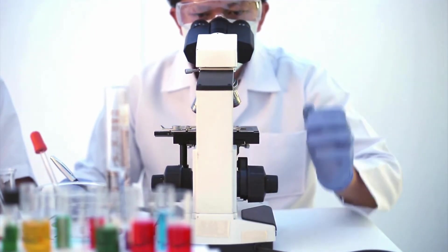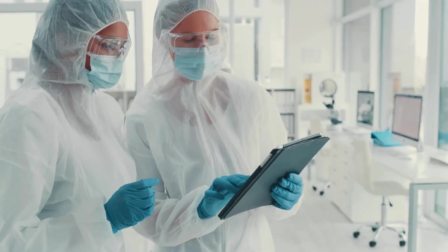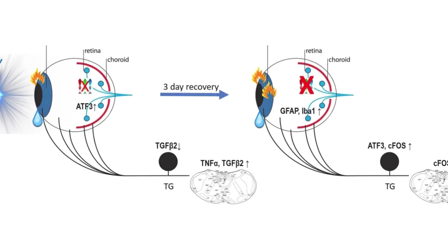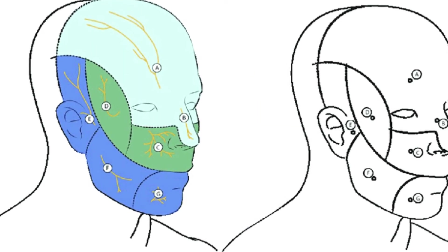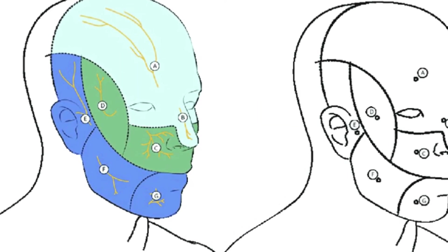The exact mechanisms are still being explored, but some experts suggest that blue light might activate pain-sensitive neurons in the trigeminal nerve, which is mainly responsible for facial sensations, so when that happens, it can trigger headaches or migraines in sensitive individuals.